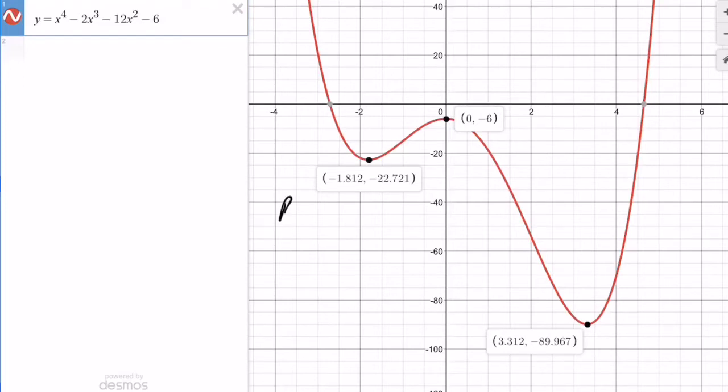Going left to right, the first point, negative 1.812, negative 22.721 is a relative minimum. Zero, negative six is a relative maximum.